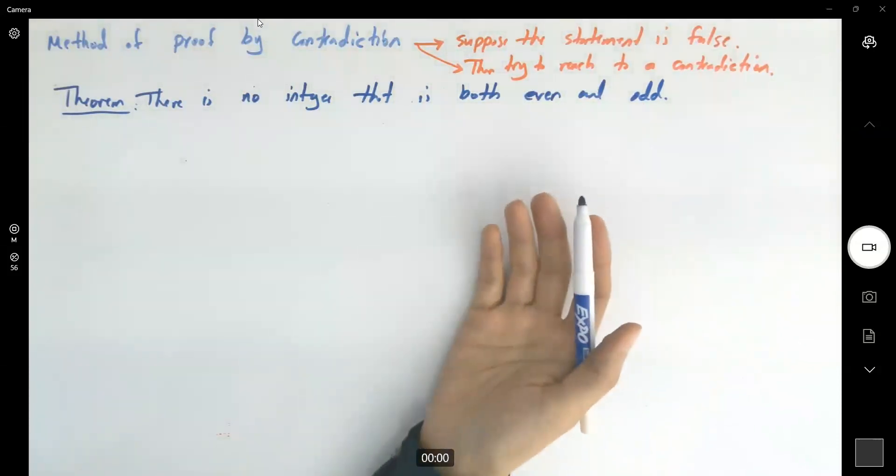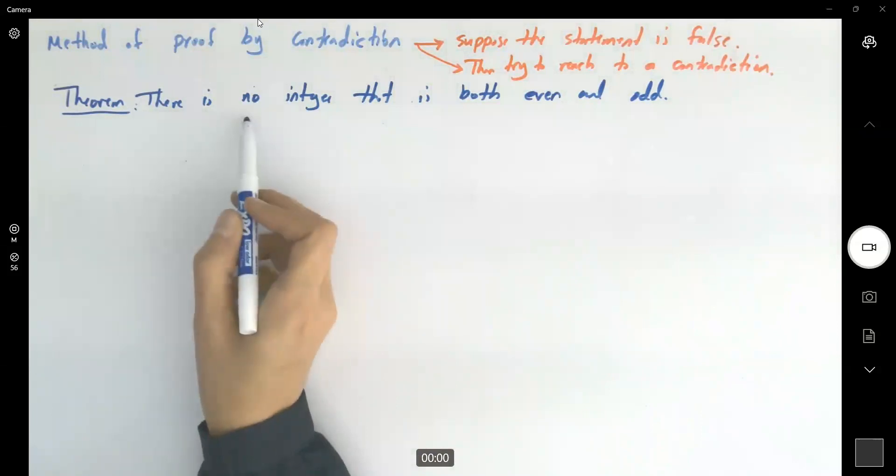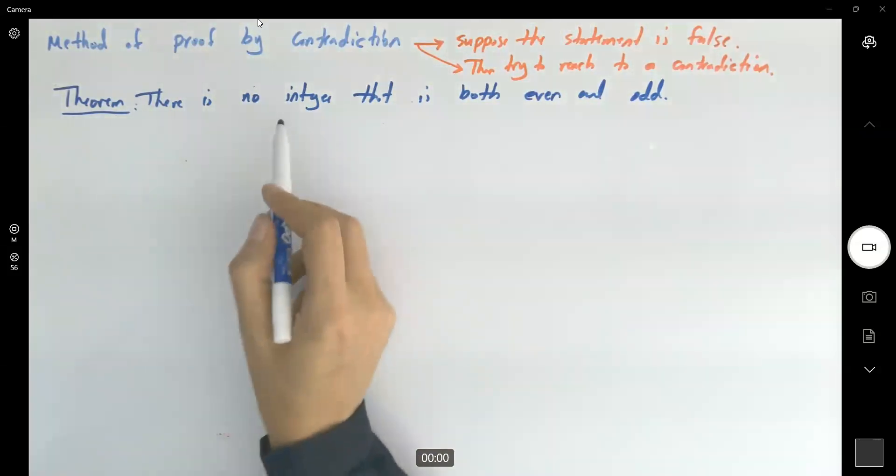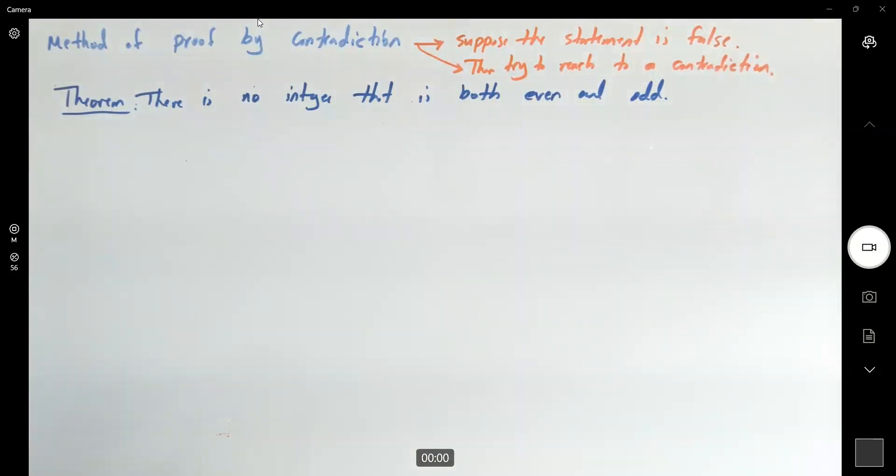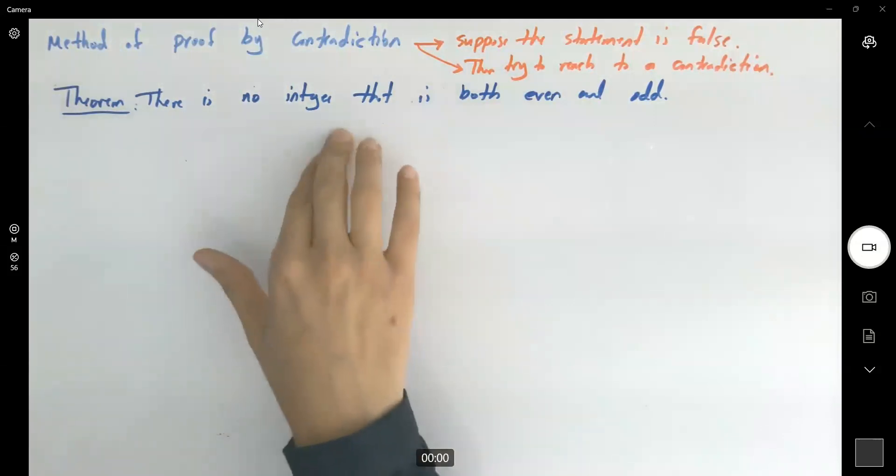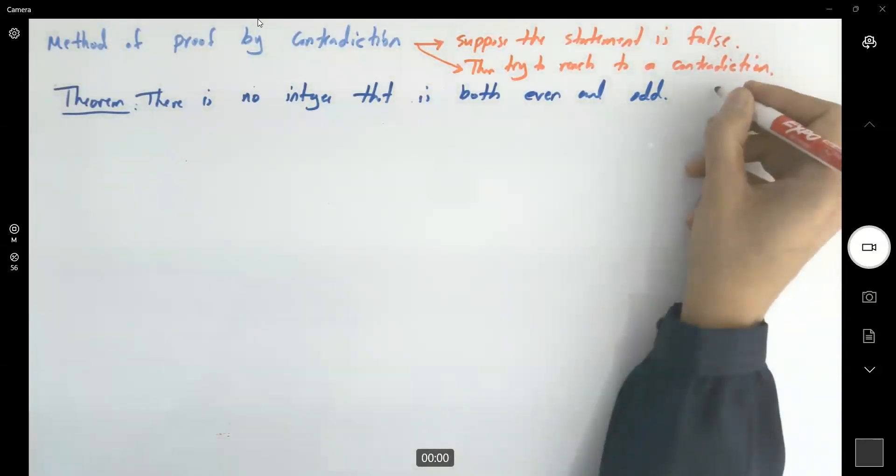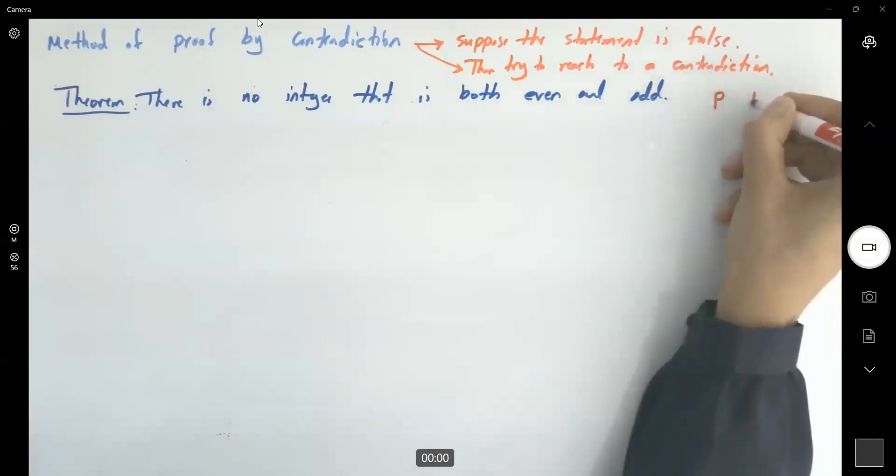How do I prove this? It says I cannot find an integer that is both even or odd at the same time. We want to show that this statement is true. So this is my statement like P. I want to show that it's true.